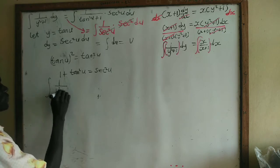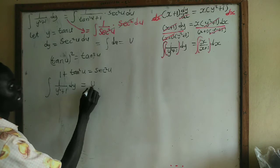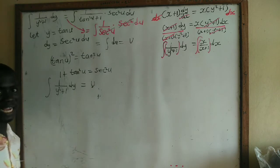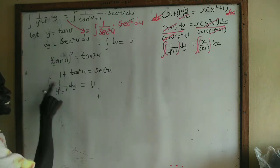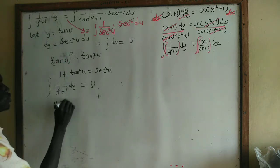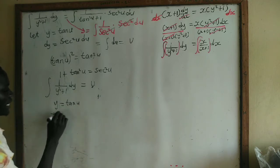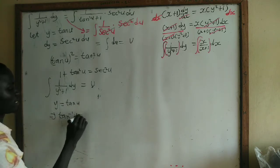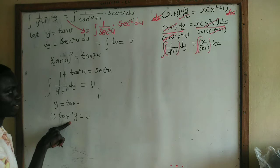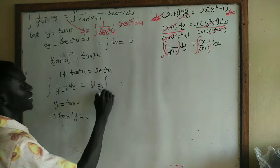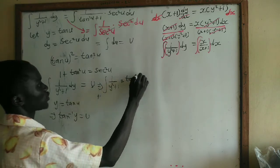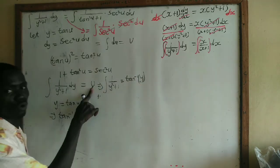So the integral of 1/(y² + 1) dy is equal to u. But we need to express u back in terms of y. From our substitution y = tan(u), this implies that u = tan⁻¹(y). So the integral of 1/(y² + 1) dy equals tan⁻¹(y).